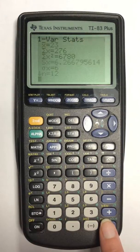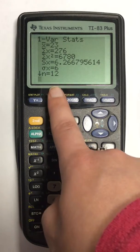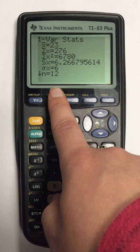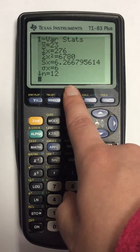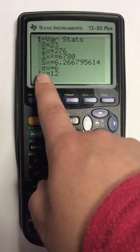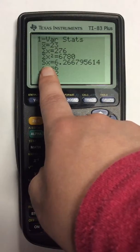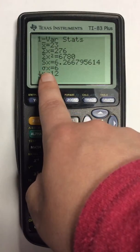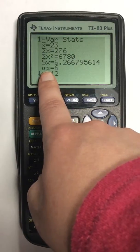Enter one more time and this will give me my summary list for that data. If I'm looking for standard deviation, that is found in two different locations. One is sample standard deviation, noted as Sx, and the other is population standard deviation, noted as sigma x.